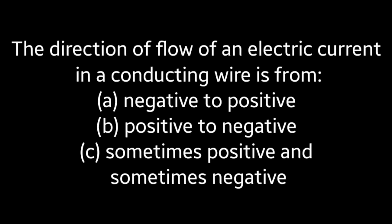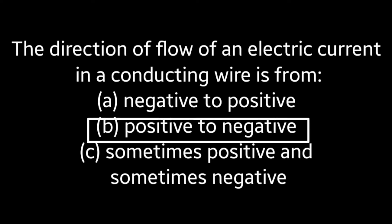Next question: The direction of flow of electric current in a conducting wire is (A) negative to positive, (B) positive to negative, (C) sometimes positive and sometimes negative. Answer is Option B: positive to negative.